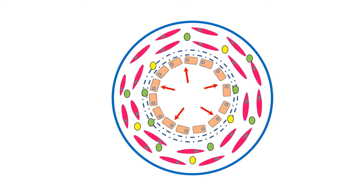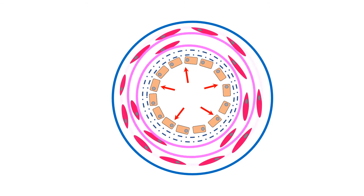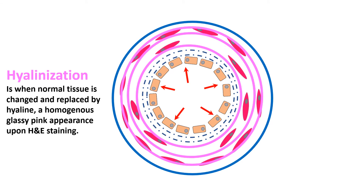Over time, there is a change in the structure of the arterial wall. This includes protein deposition, extracellular matrix production, as well as smooth muscle cell degeneration, which leads to a homogenous glassy pink appearance upon H&E staining. This is known as hyalinization, indicated by the pink circle lines.